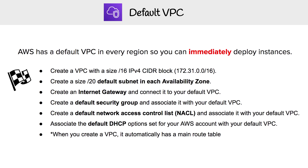It will also come with a default NACL associated with your VPC, as well as default DHCP options. One thing that's implied is that it comes with a main route table — when you create a VPC, it automatically comes with a main route table, so that would come by default as well. So those are all the defaults for you.